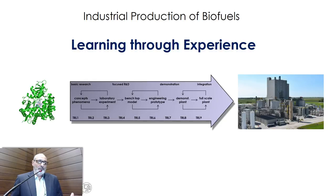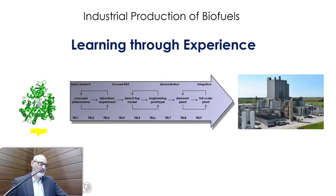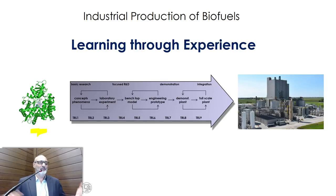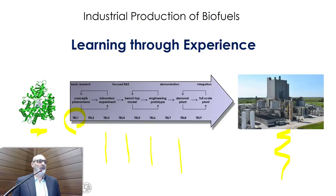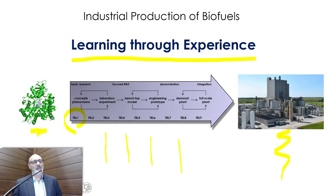This TRL progression is happening to us in biofuels. The idea that we can use enzymes to deconstruct polymers of sugar is TRL-1. Now we have industrial units trying to do this at large scale and make money from it. Both ends of this scale and the parts in the middle have happened and are happening right now. What have we learned from all these experiments? That's another guideline of my talk.